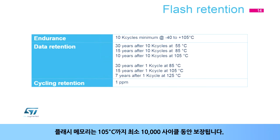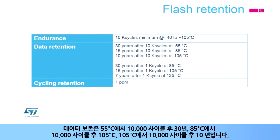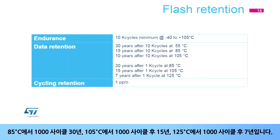The flash memory is guaranteed for a minimum of 10,000 cycles up to 105 degrees Celsius. Data retention is 30 years after 10,000 cycles at 55 degrees Celsius, 15 years after 10,000 cycles at 85 degrees Celsius, 10 years after 10,000 cycles at 105 degrees Celsius, and 7 years after 1,000 cycles at 125 degrees Celsius.